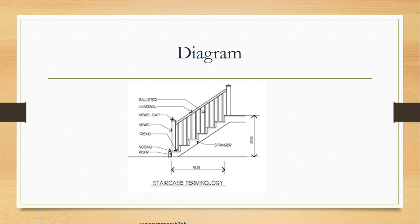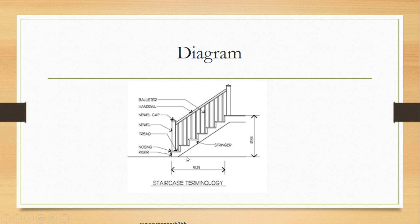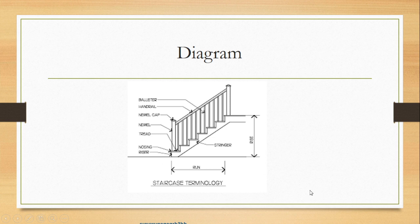The run is the total distance of all the treads combined — the total horizontal distance of the entire staircase. So the run would be from this point here to where the stairs end right up here, which would be this tread plus that tread plus all the others. That gives us the total run. And the rise is the vertical distance of the entire staircase — the total distance of all the risers combined. So the rise is the total vertical distance, and the run is the total horizontal distance.